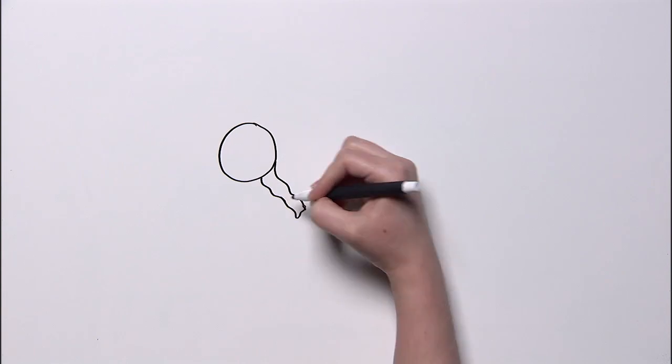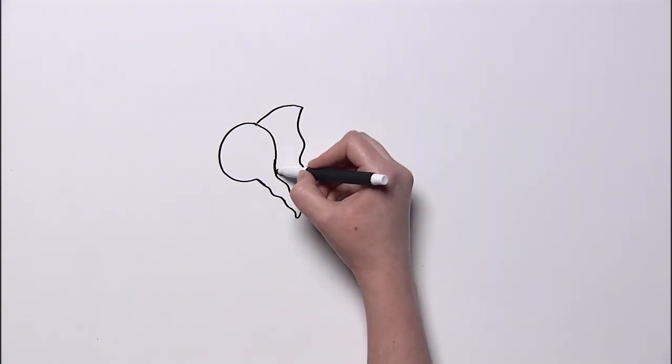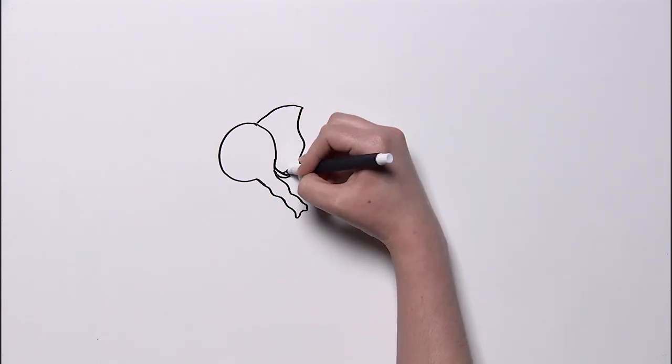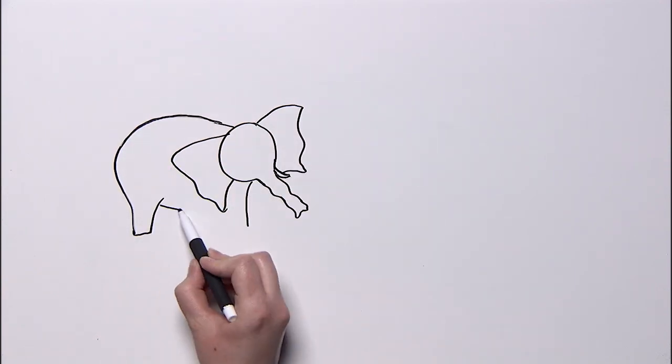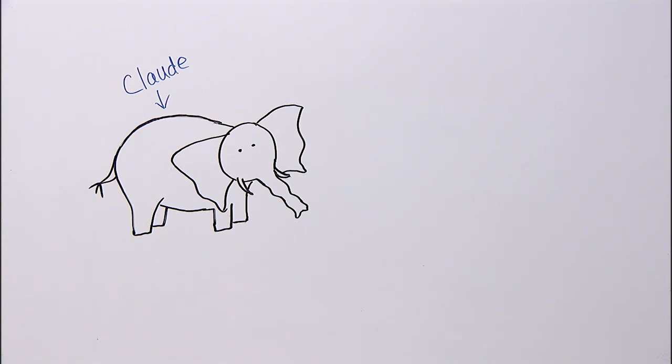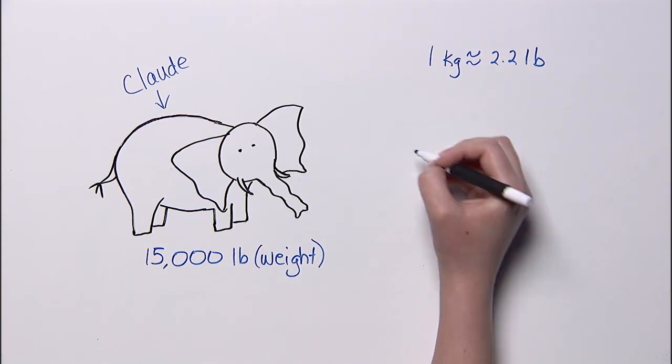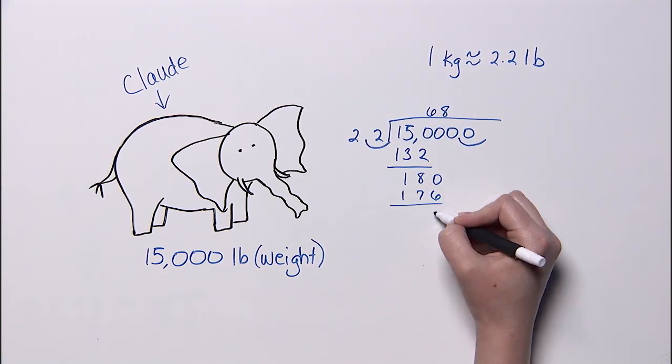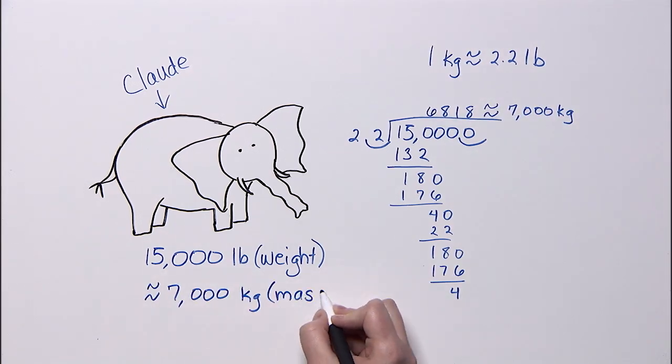Now, if you were to weigh your pet elephant Claude here on Earth, you'd find that he weighs about fifteen thousand pounds. Since one kilogram of mass weighs about two point two pounds, you could do some calculations to find that Claude's mass is about seven thousand kilograms. But, you couldn't say that Claude weighs seven thousand kilograms.